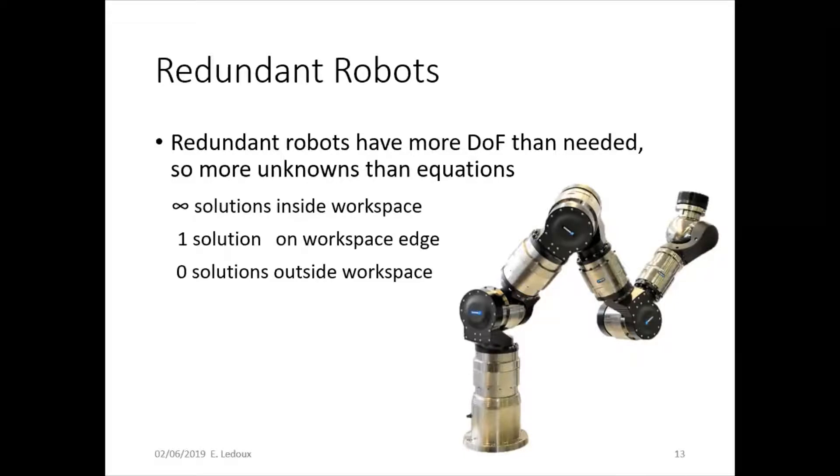Redundant robots have more degrees of freedom than needed, so more unknowns than equations. This would be like a robot that has more than 3 joints that moves 2-dimensionally or one that has more than 6 joints that moves 3-dimensionally. Or that has more than 1 joint that moves on only 1-dimension. So these have infinity solutions inside of the workspace because there's an extra joint so it could be whatever it needs to or any possible value. Then they have 1 solution on the workspace edge when the robot is completely stretched out or 0 solutions outside of the workspace where it can't touch at all.